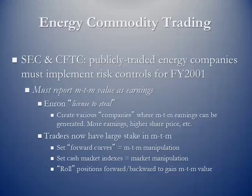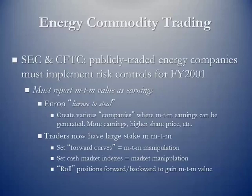Also, the traders now had a large stake in mark-to-market. They wanted to manipulate the prices — setting forward curves and forward prices in the marketplace — for certain price categories they were reporting to publications and others. You can see they were starting to influence the cash marketplace and cash publications, which is direct market manipulation. Then another thing they would do is roll positions forward and backward to gain mark-to-market value — liquidating positions, drawing cash in, then putting those same positions back on. This was about fluffing books so they were not a true reflection of actual earnings or cash positions.